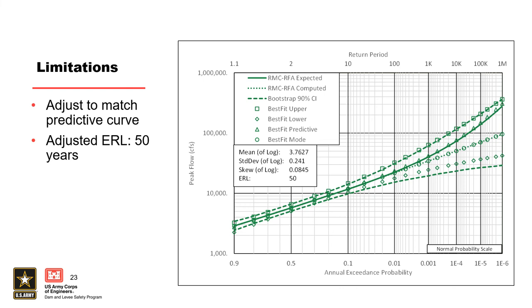Notice that the agreement improved at the upper credible limit; however, things got a little worse at the lower credible limit. In most cases, it is not possible to get good agreement over all curves, so we must choose which curve we would like to match the best. A good rule of thumb is to match the posterior predictive curve from Best Fit to the expected curve from the RFA analysis. Strictly speaking, this new estimate of 50 years is not really an effective record length — we call it a pseudo effective record length estimate. This is the value to use in our RMC RFA analysis. Future versions of RMC RFA will address this issue and eliminate these limitations.